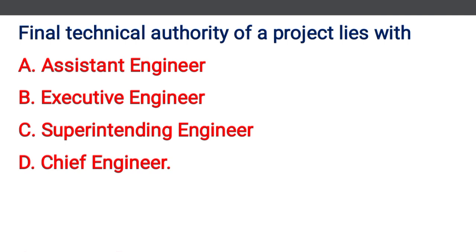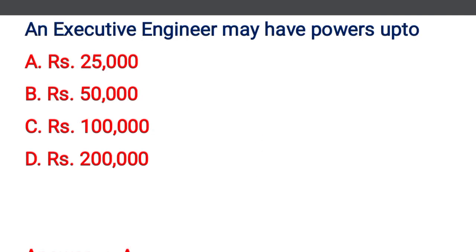Next question: final technical authority of the project lies with — option A: assistant engineer, option B: executive engineer, option C: superintending engineer, option D: chief engineer. The correct answer is option D: chief engineer.